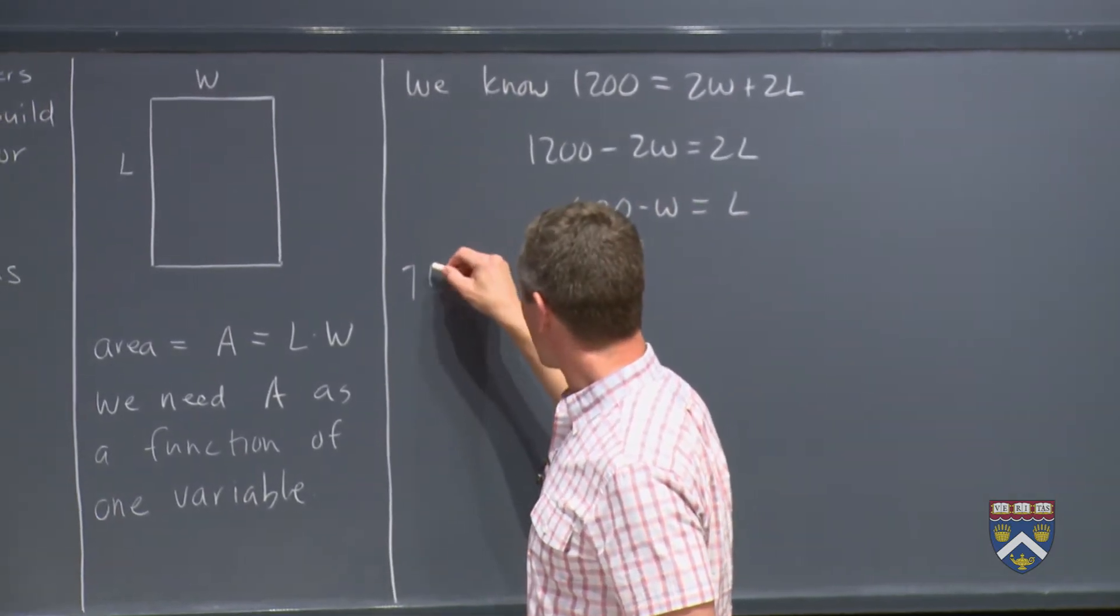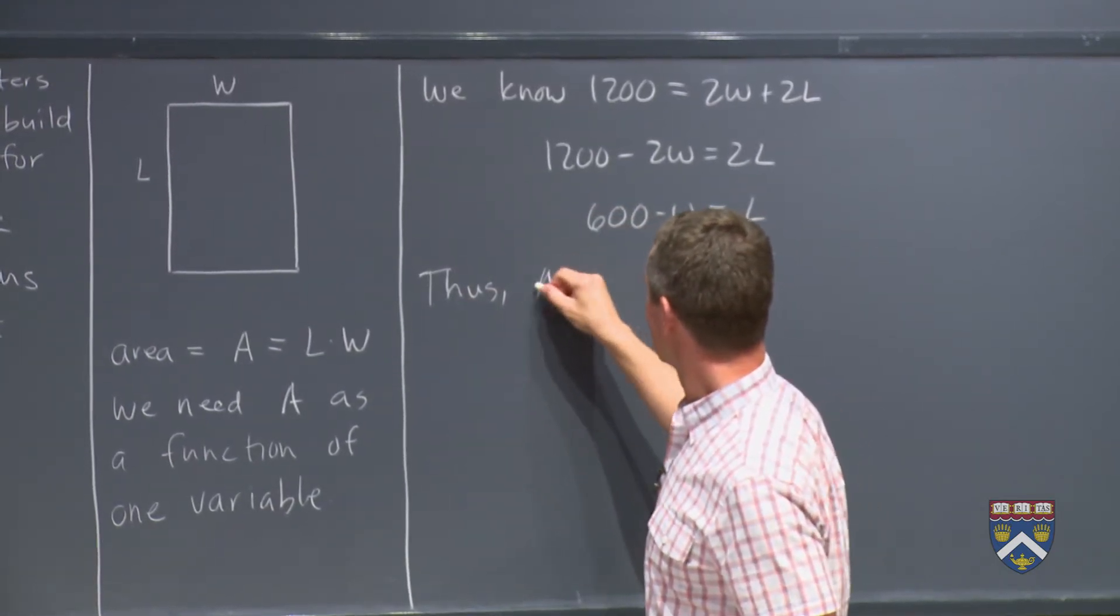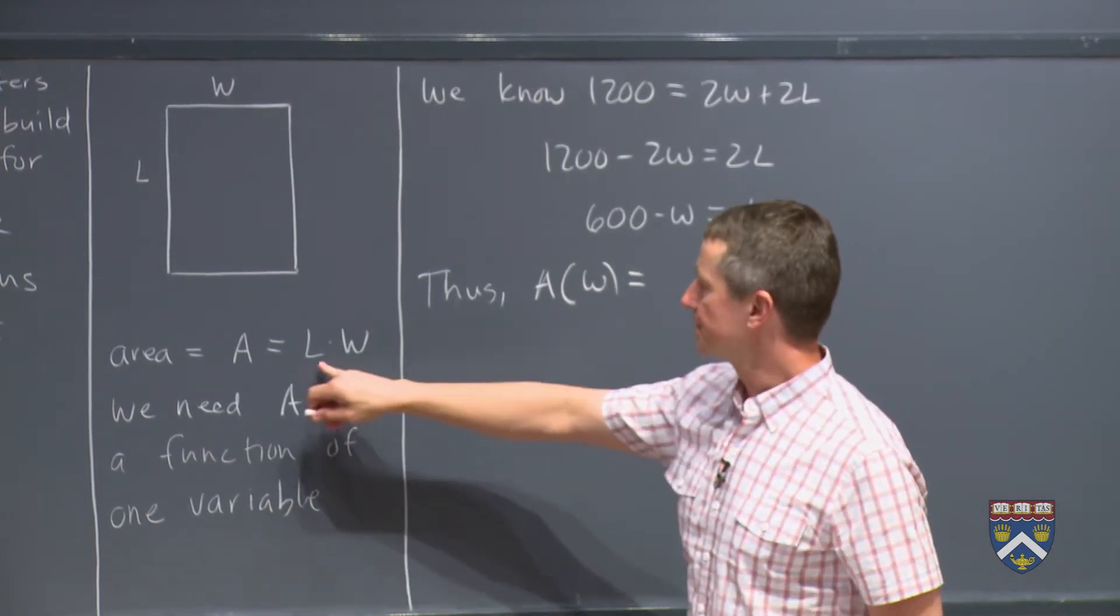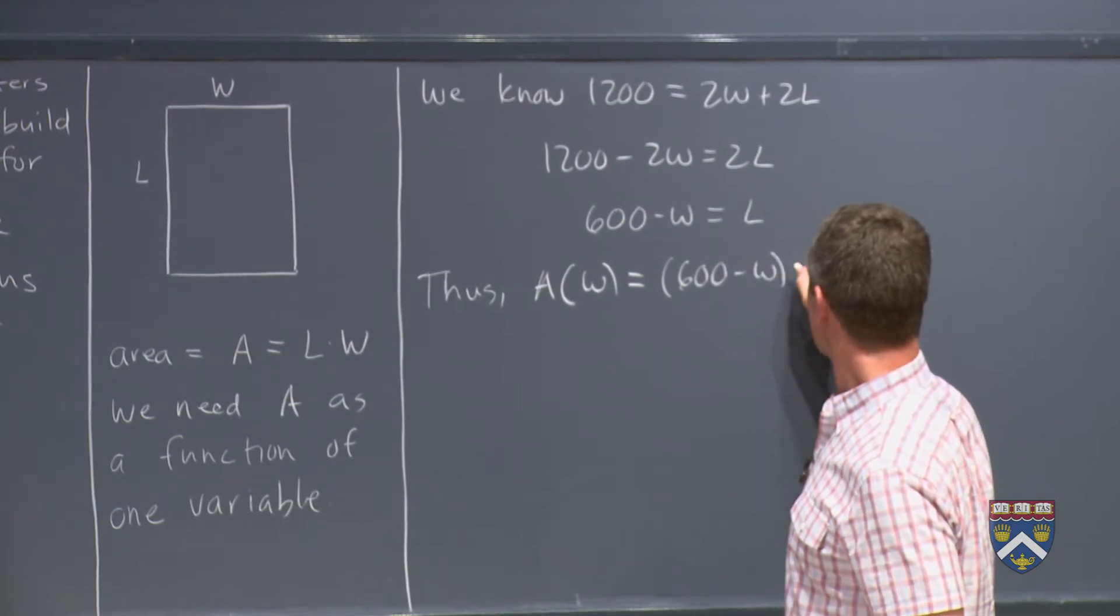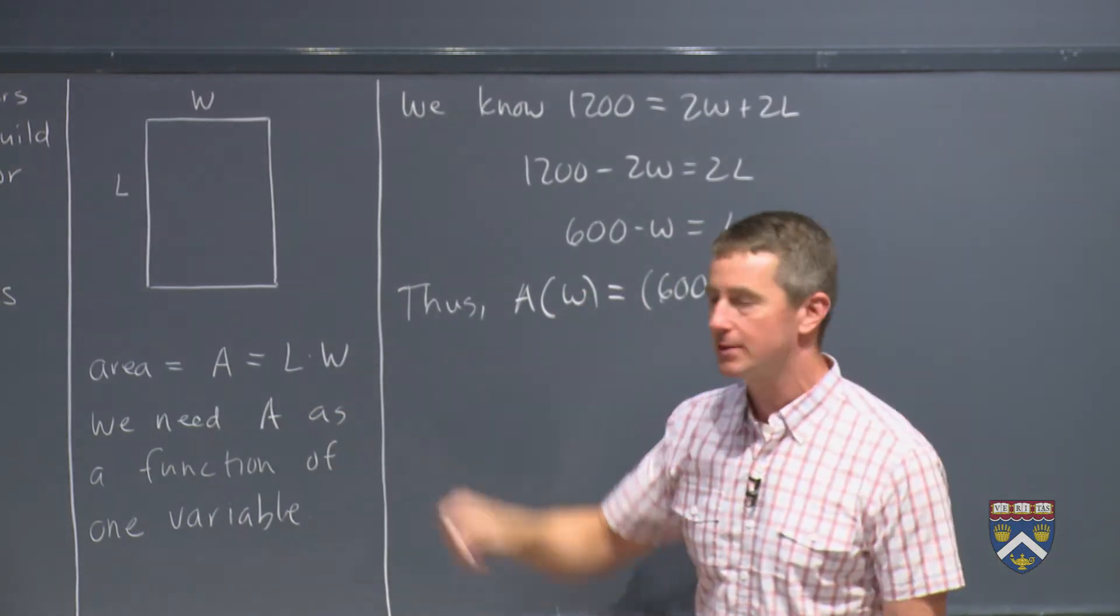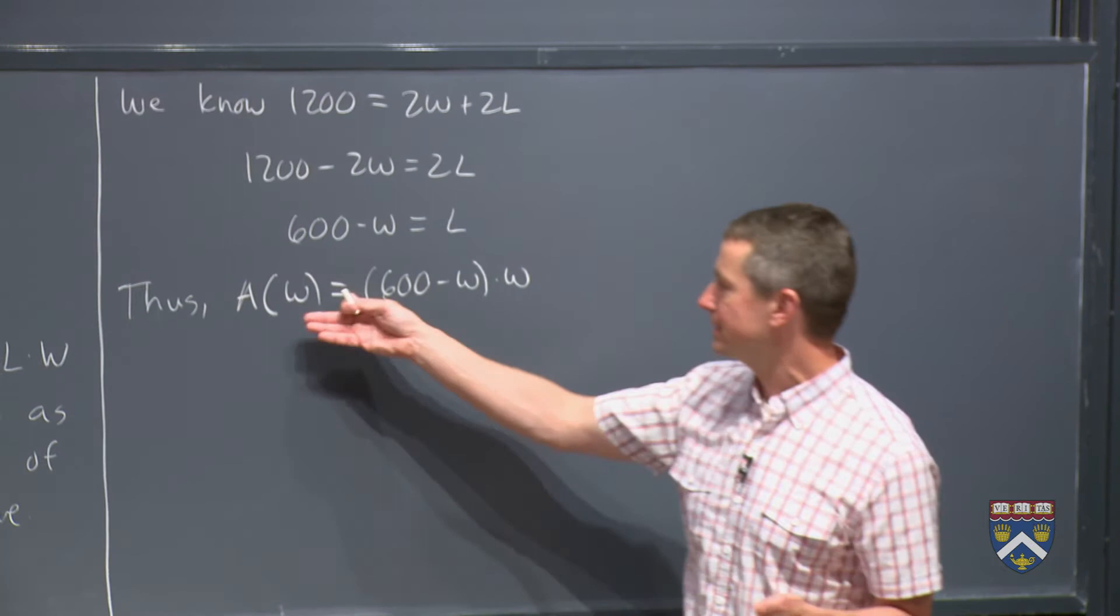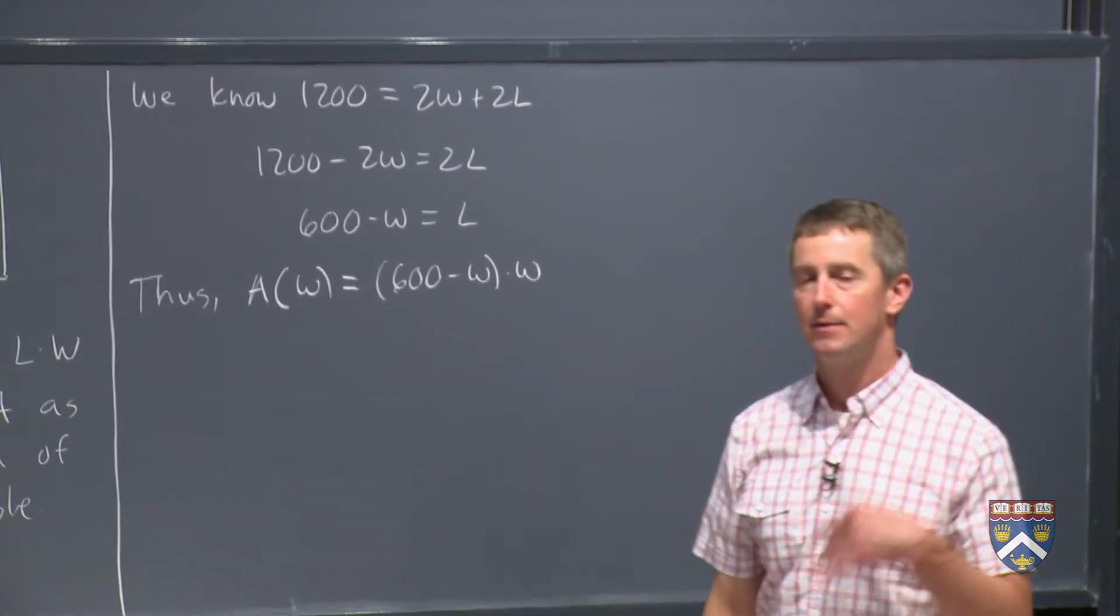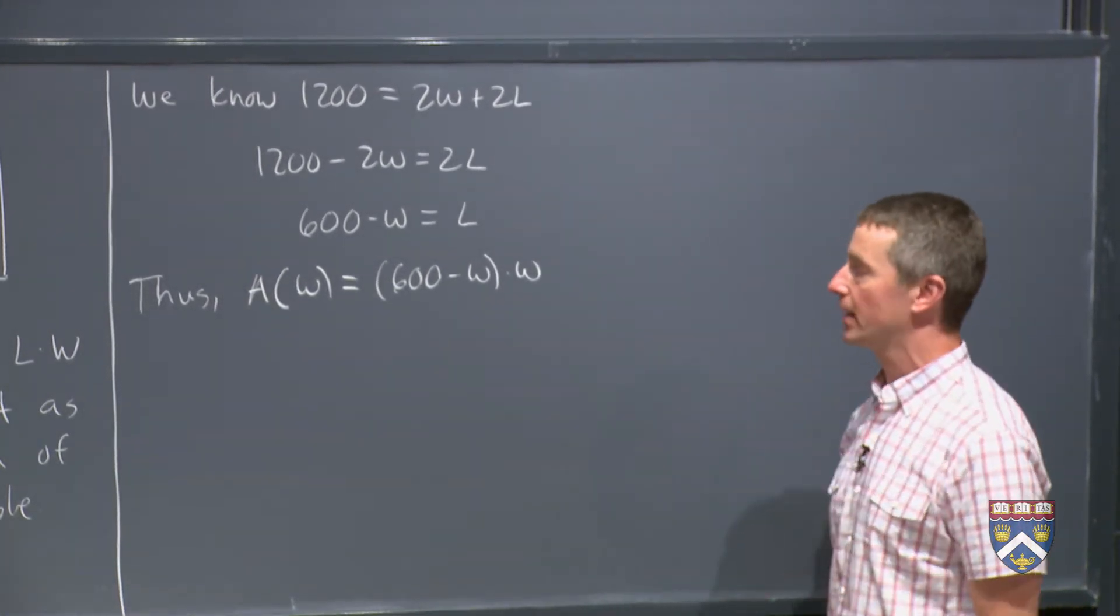Thus, I now have a formula for A entirely as a function of one variable. I have A of W. A was length times width. Length is 600 minus W. Length times width. I just substituted this expression for L into my formula for A. So now we've succeeded. We've got our formula down, our function as a function of just one variable, which is exactly what we want. Now we can employ all of our powerful machinery from calculus to find the maximum of this function.